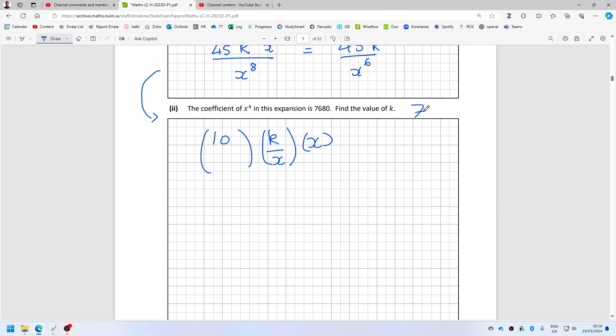So we're trying to get 7680 x power 4. That's what we're trying to get. Right. Now, how to get a 4? So the top will have to be bigger than the bottom in terms of powers.